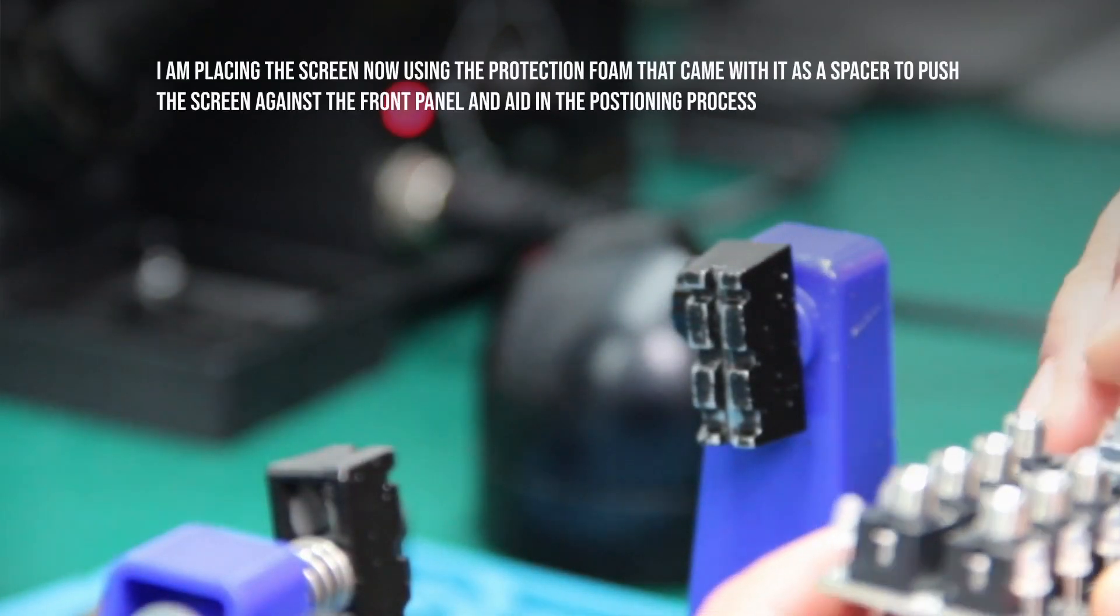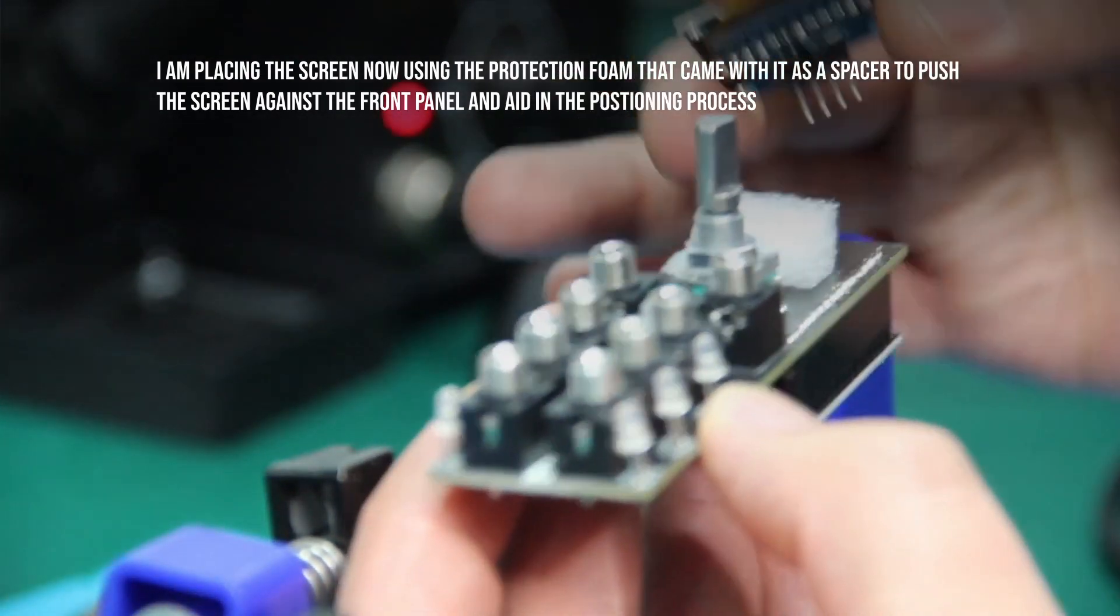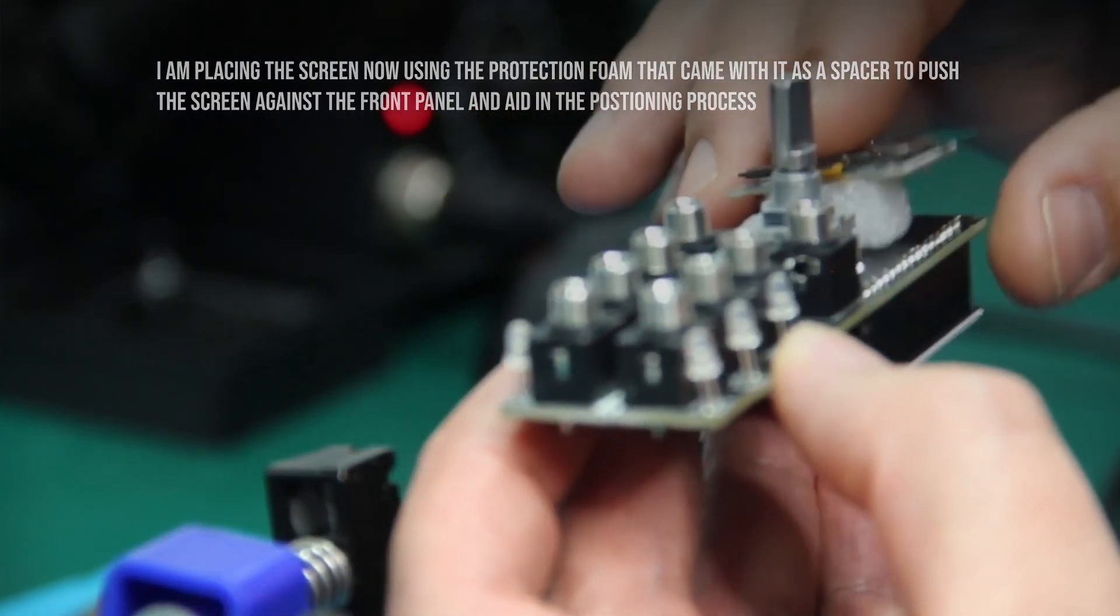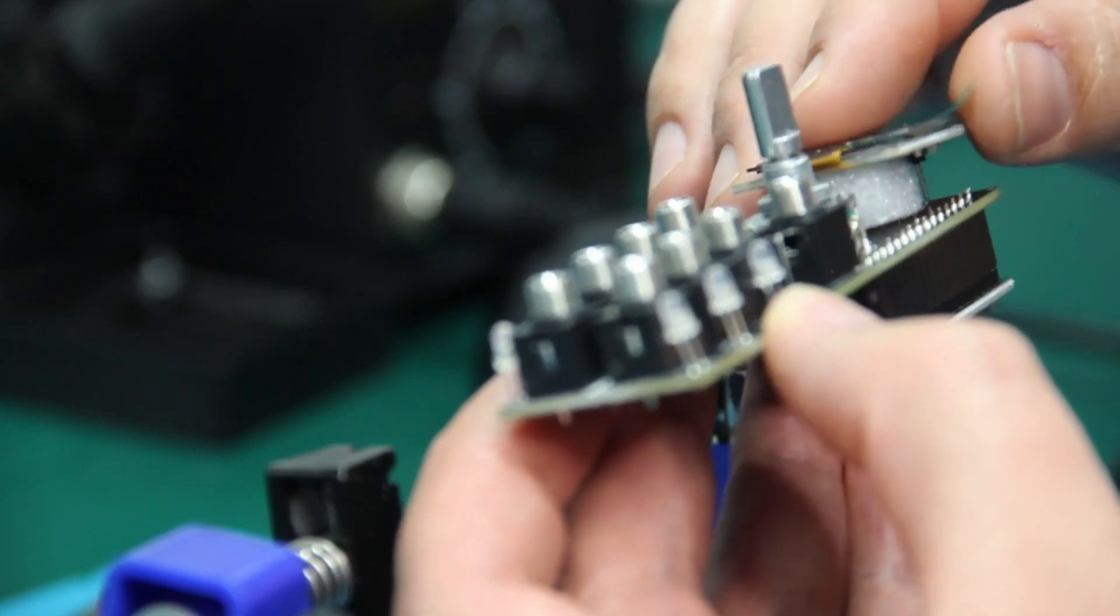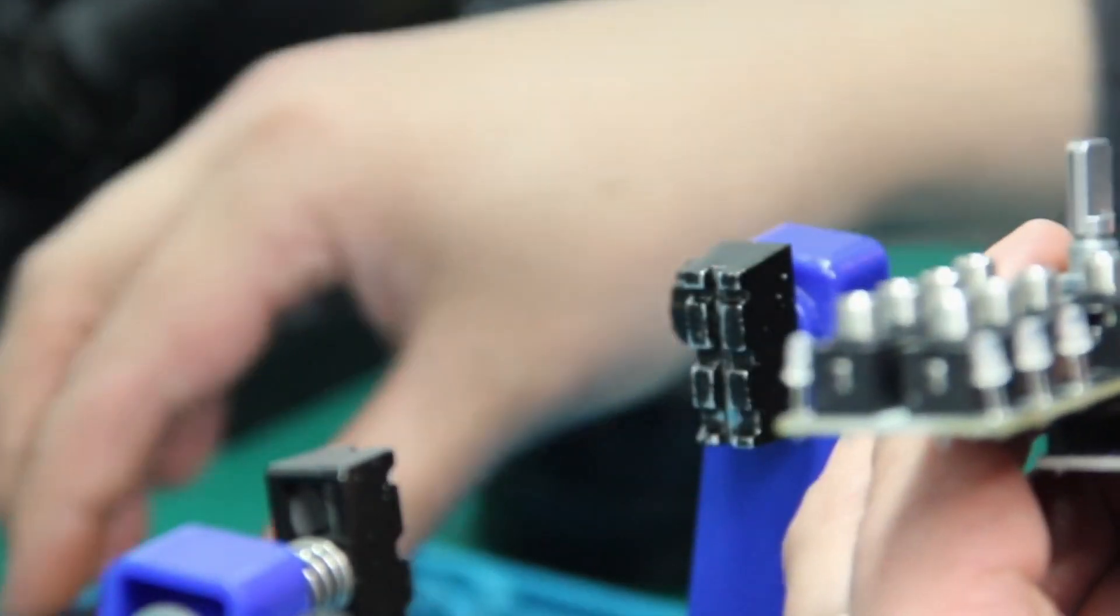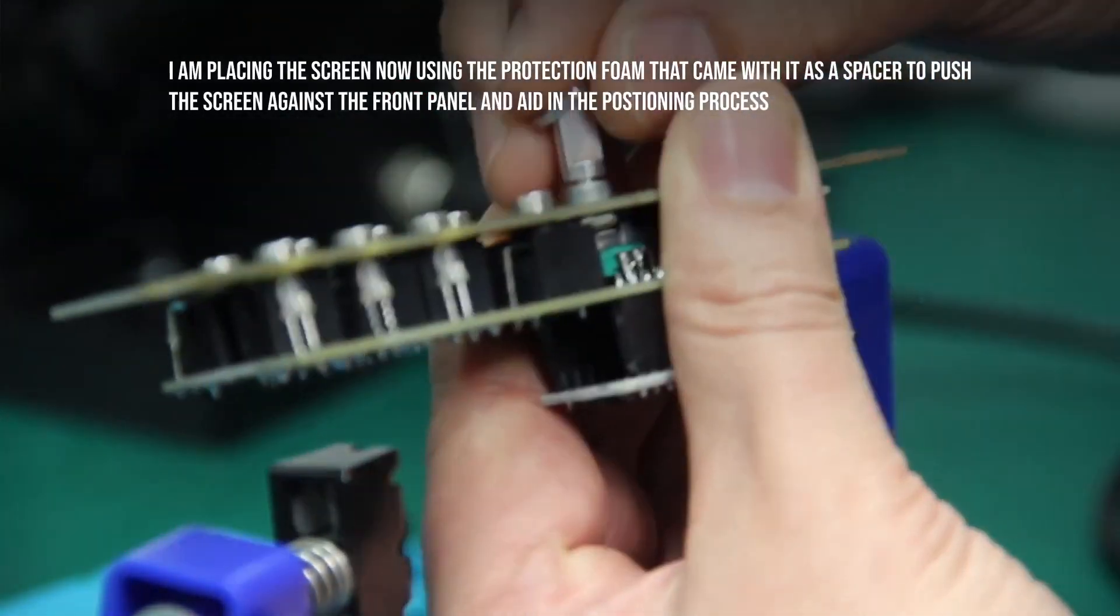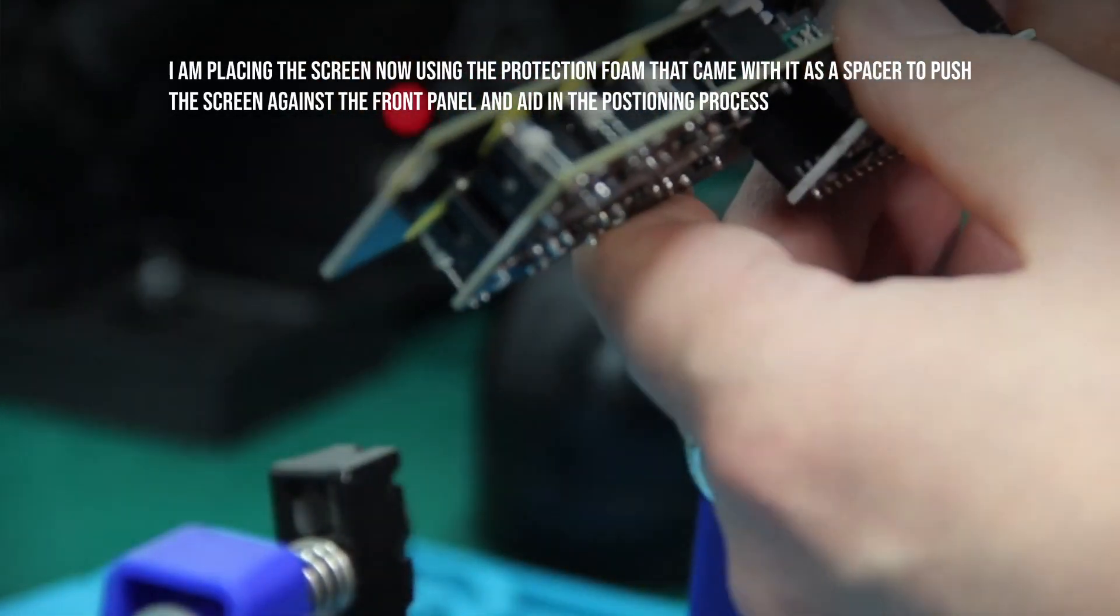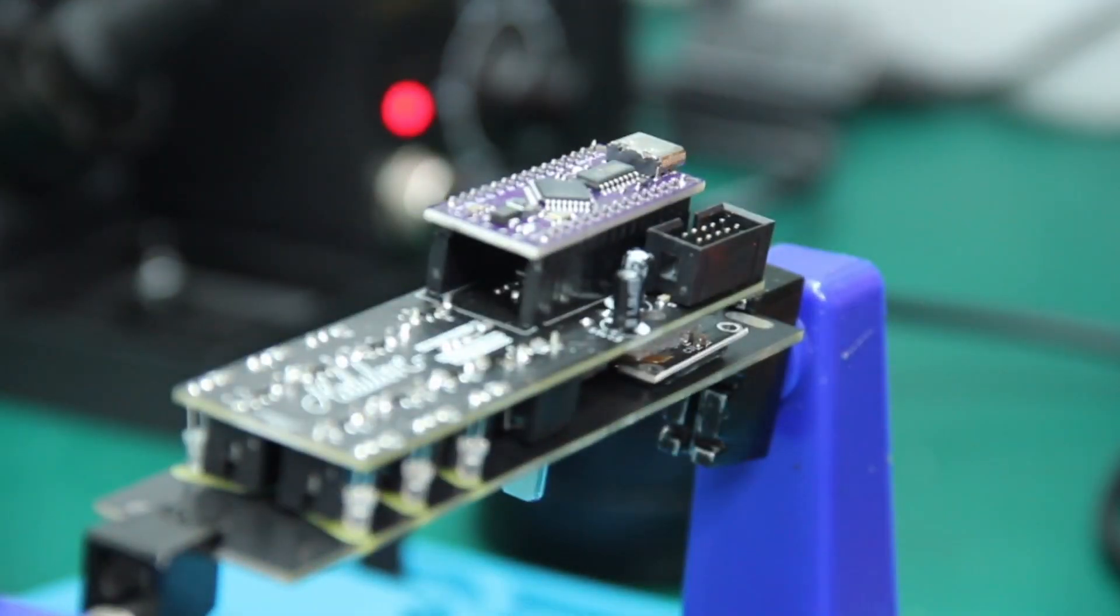Now I am placing the screen using the protection frame that came with it as a spacer to push it against the front panel. You may also want to remove the protective film to quicken the build. Push the pins through and hold the screen in place while you place the front panel on and attach the nut to the encoder. This will hold it in place, making it much easier to solder the screen.